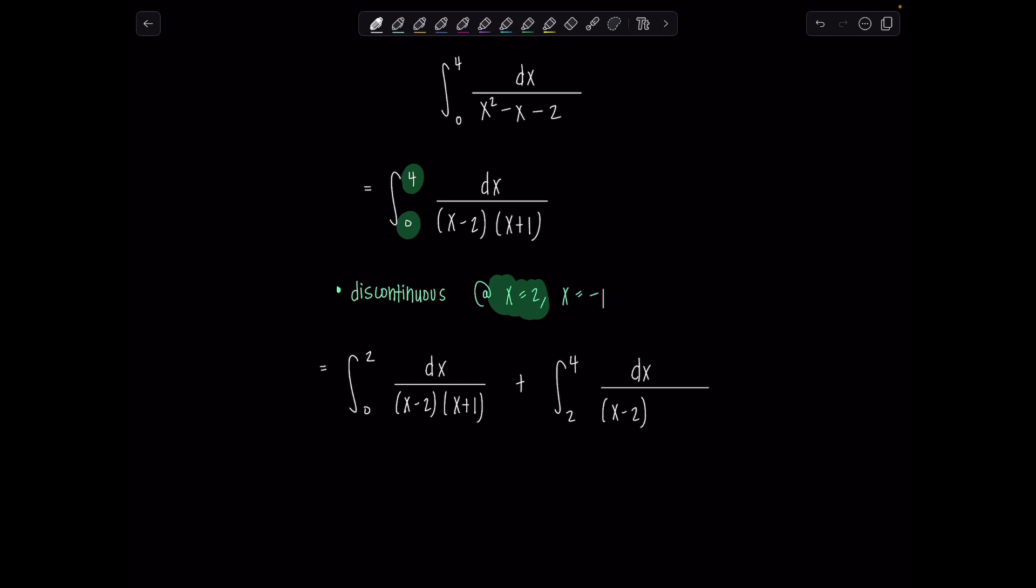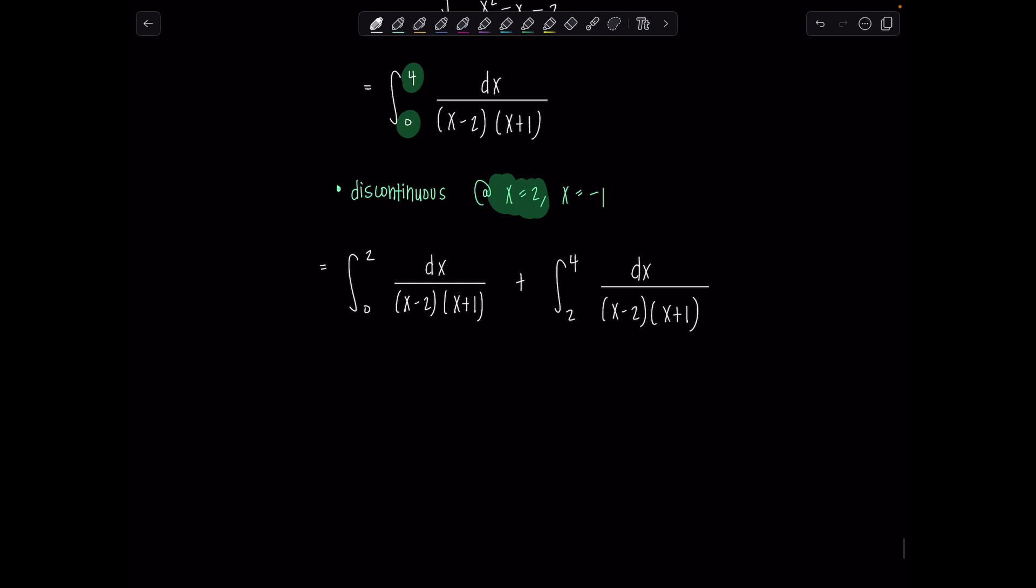And then each of these we'll need to evaluate separately perhaps, but I'm going to rewrite them as a limit first because the point of discontinuity makes each of these an improper integral. So we're going to rewrite them. I'll use t maybe as my dummy variable here. So we're going to take the limit as t approaches 2 from the left for the first integral. So notice if you're going 0 to 2, the only way to approach 2 is from the left-hand side. And then now my limits are 0 to t dx over x minus 2 times x plus 1 plus,